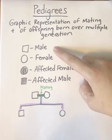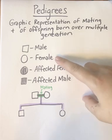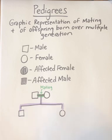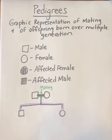When you draw squares, that's the male, and when you draw a circle, that's a female. We use pedigrees to determine if we have dominant traits in a generation or recessive traits. We can see matings, offspring that are born, and multiple generations.